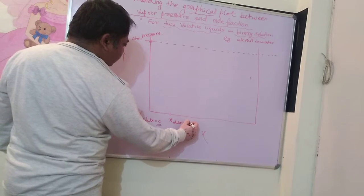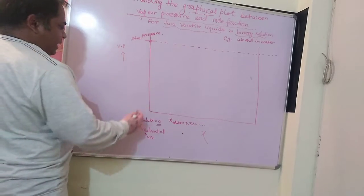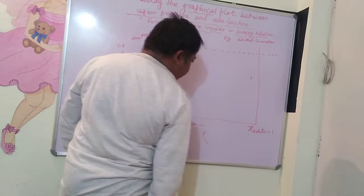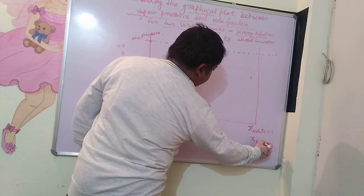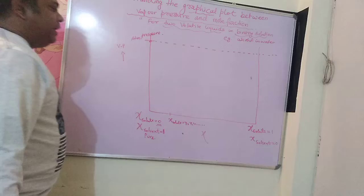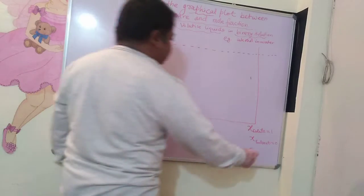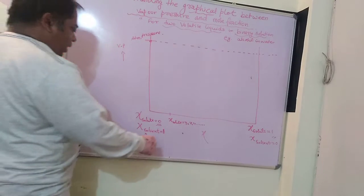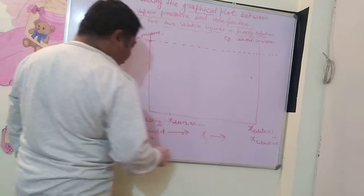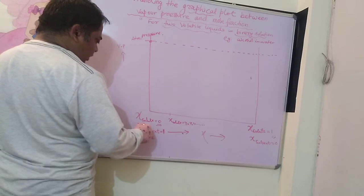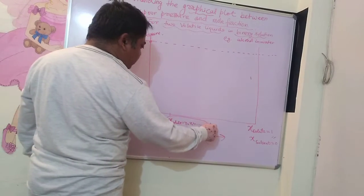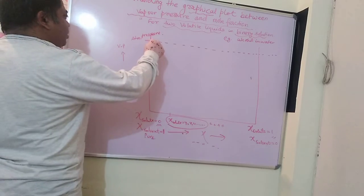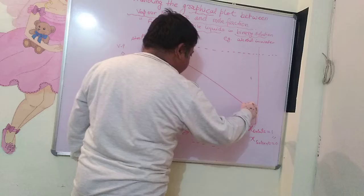Now, slowly when solute is added in increasing quantities, a time will come when the mole fraction of solute becomes 1 and mole fraction of solvent becomes 0. As we keep on adding solute, solvent keeps on decreasing. As a result, the vapour pressure of the solvent also decreases.